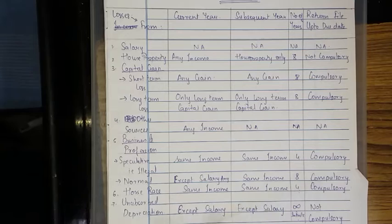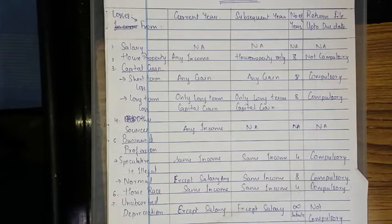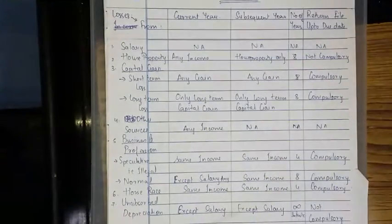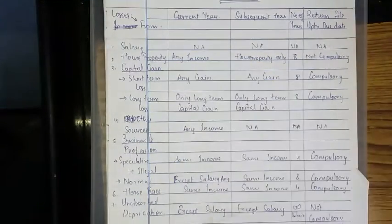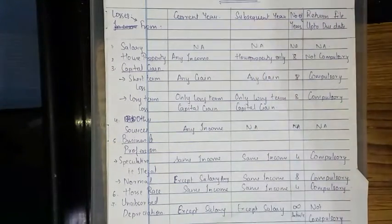This chart is very important — it comes in every sum. In IPCC there is also negative marking. If you don't get these small adjustments right — for example, if there is a house property loss and you don't set it off against any income in the current year — the entire total income calculation will come out wrong. When you become a Chartered Accountant, if a client says they have a loss from house property and income from salary, you must deduct the loss before calculating tax — not ignore it.